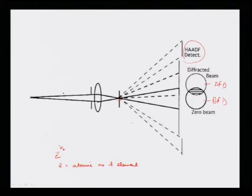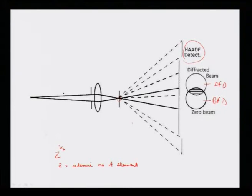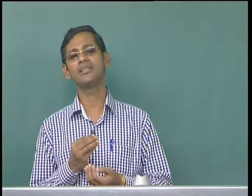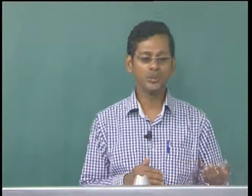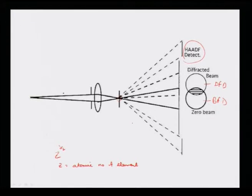HAADF has its own limitations: the sample must be properly oriented, and in many cases the signals depend on sample thickness. For thick samples the HAADF signal is good, but for thin samples it can be weak. One needs a very high-density, well-focused beam from the objective lens so that the HAADF detector intensity for thin samples is sufficient.